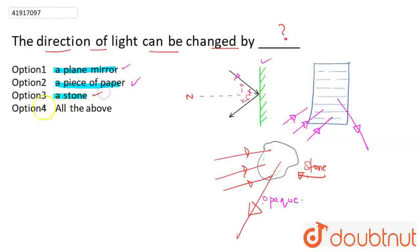One, two, three - we have four options: all of the above. So the correct answer will be option four, that's it. All of the above, these options can change the direction of light.